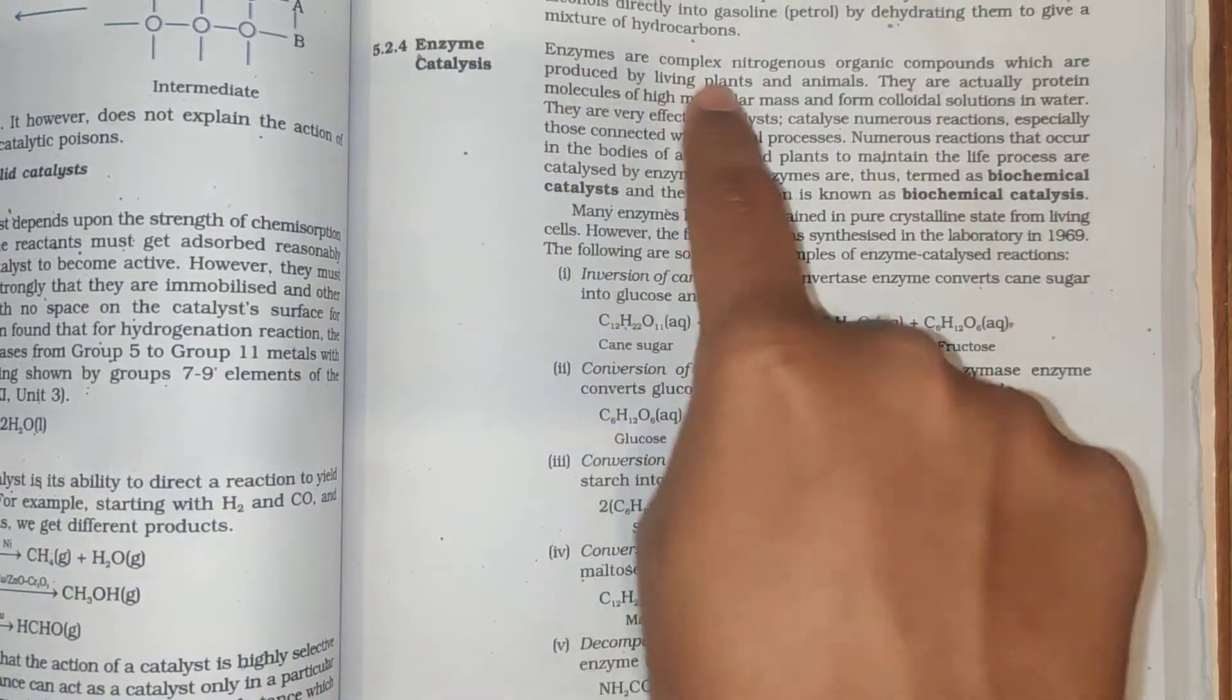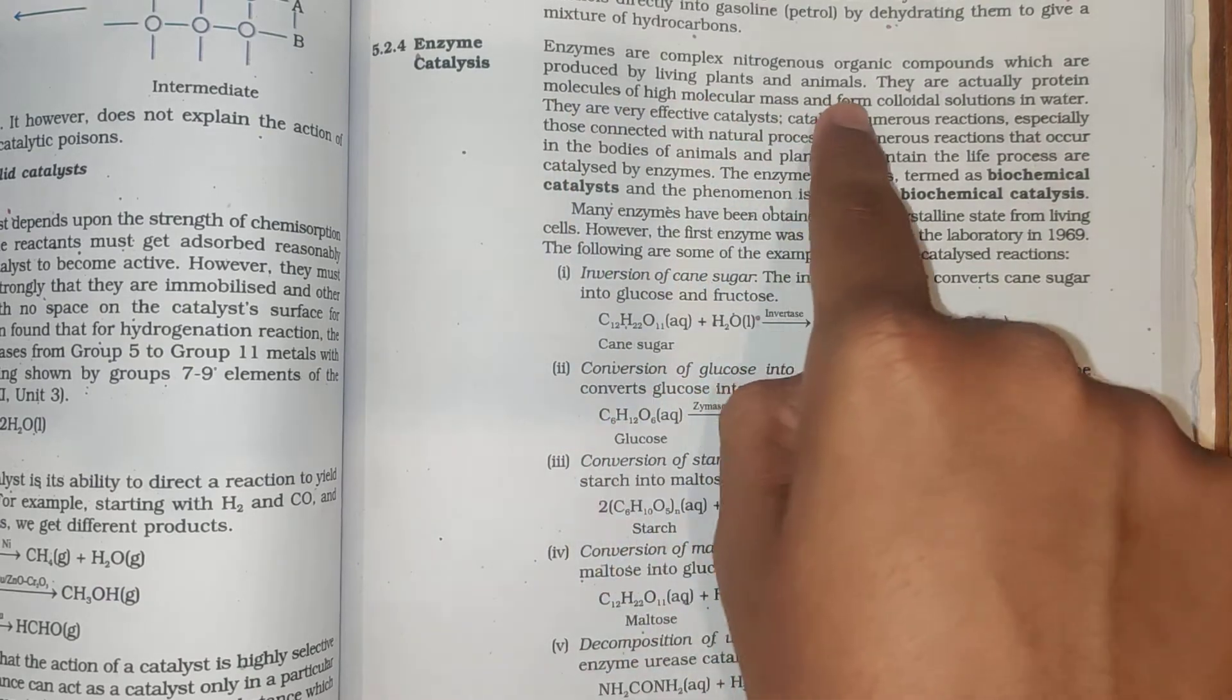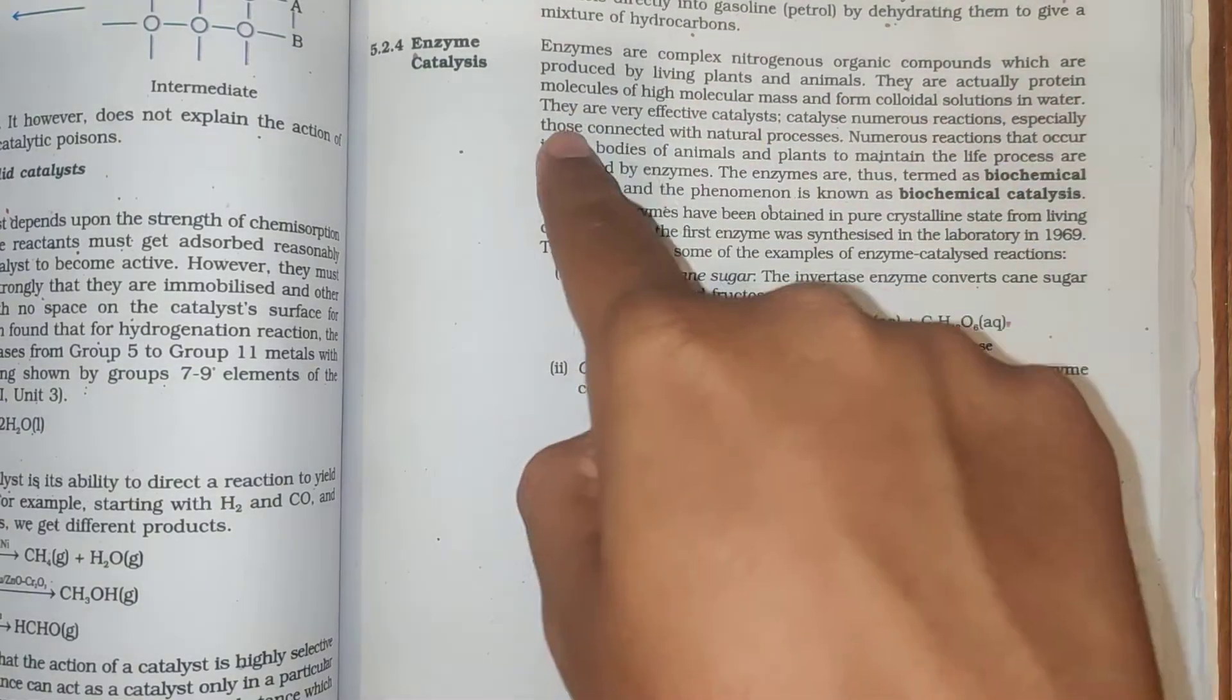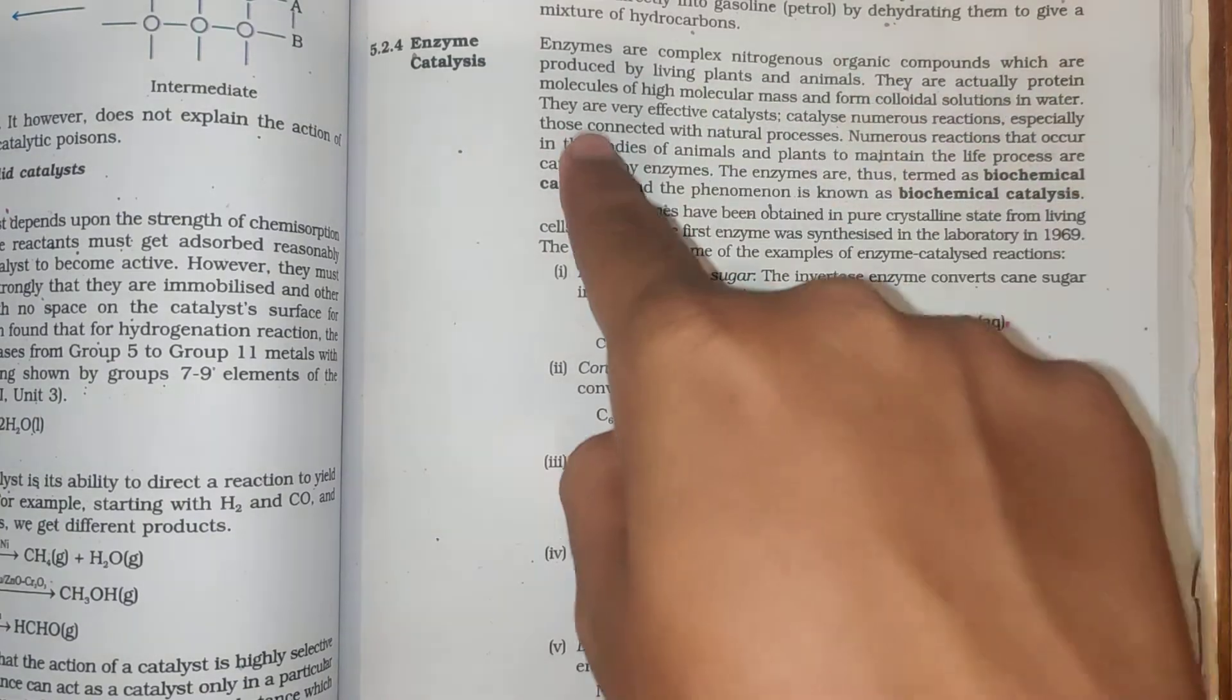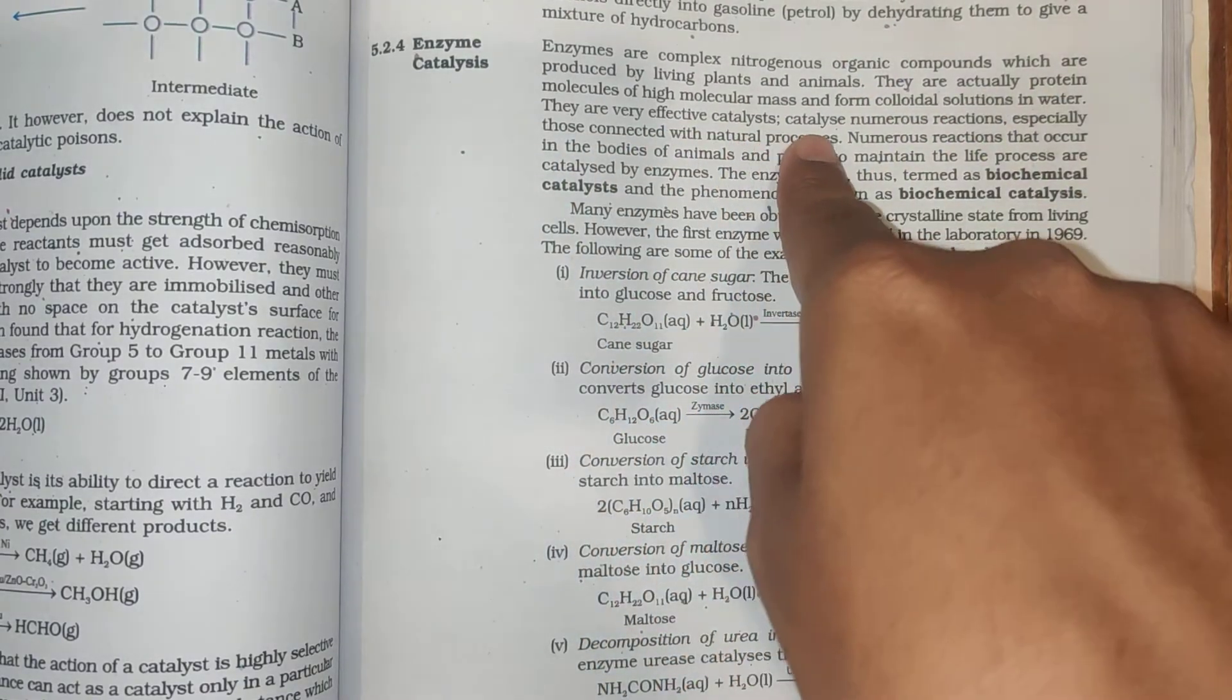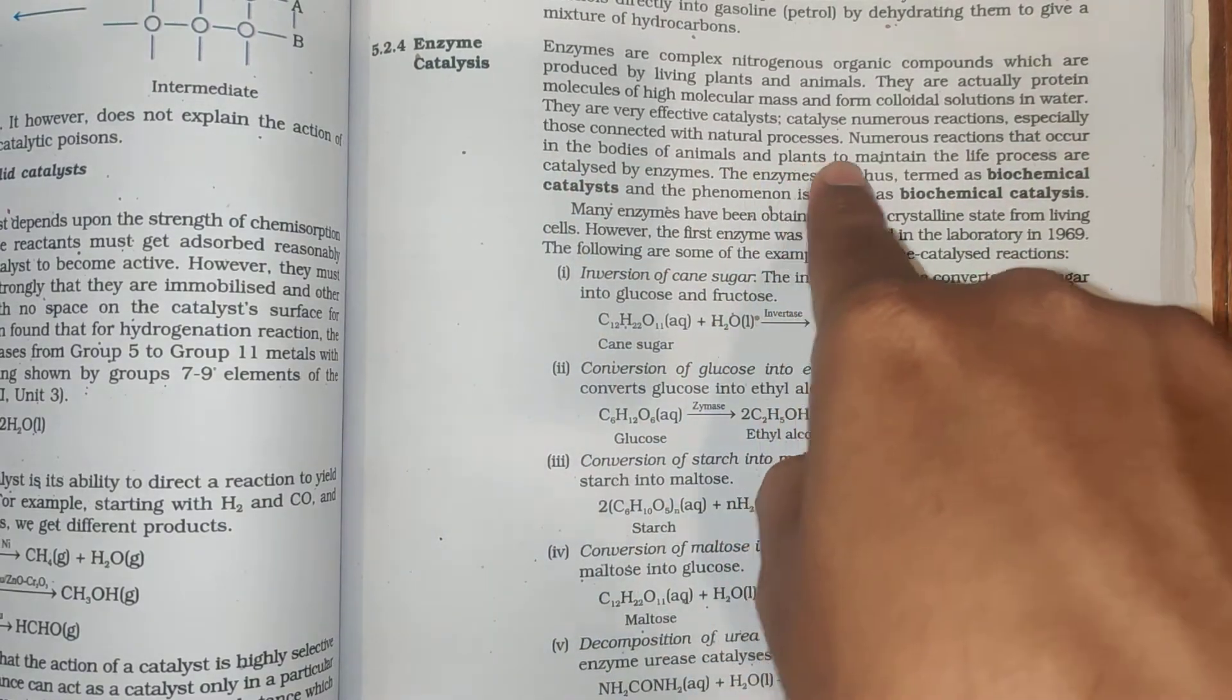Enzyme Catalysis. Enzymes are complex nitrogenous organic compounds produced by living plants and animals. They are protein molecules of high molecular mass that form colloidal solutions in water. They are very effective catalysts that catalyze numerous reactions, especially those connected with natural processes.